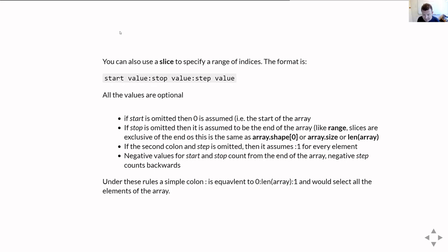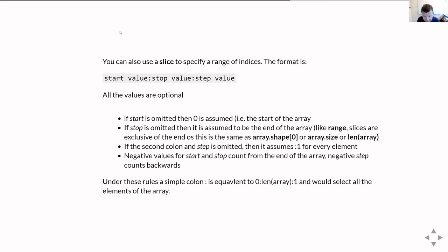If you wanted to manually specify the full range, you'd have to go to one plus the size of the array. If you omit the second colon and step value, it assumes a step of one — meaning get every element. If you put negative values for start or stop, you're counting from the end of the array back towards the start. A negative step means to count backwards. Just a single colon on its own basically means everything.